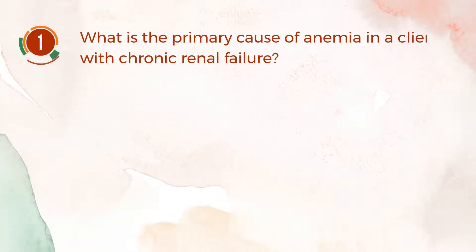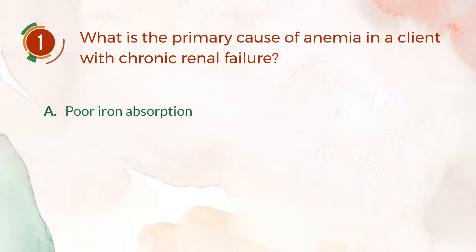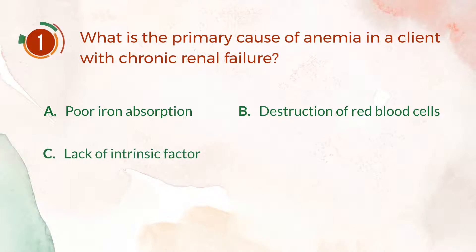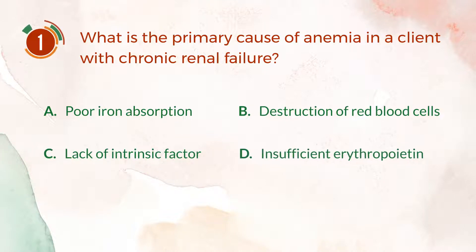Number 1. What is the primary cause of anemia in a client with chronic renal failure? A. Poor iron absorption. B. Destruction of red blood cells. C. Lack of intrinsic factor. D. Insufficient erythropoietin.